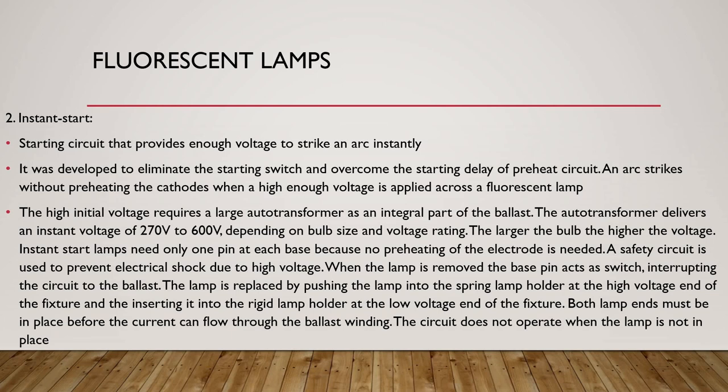A safety circuit is used to prevent electrical shock due to high voltage. When the lamp is removed, the base pin acts as a switch interrupting the circuit to the ballast. The lamp is replaced by pushing it into the spring lamp holder at the high voltage end of the fixture and inserting it into the rigid lamp holder at the low voltage end. Both lamps must be in place before current can flow through the ballast winding. The circuit does not operate when the lamp is not in place.